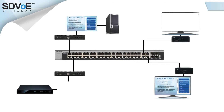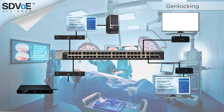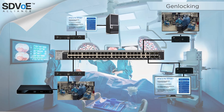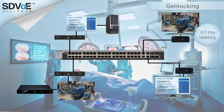Let's begin with the genlock mode. Mission critical applications such as operating theatres or the live streaming of an event require genlocking. The genlock mode ensures that the source connected to the transmitter outputs the exact resolution to the receiver connected to the display. The total latency from source to display in genlock mode is 0.1 milliseconds, which is actually the same as your matrix switch. This is exactly what we mean by the matrix transformed — it's identical to matrix switch performance, but on a flexible, cost-effective ethernet backbone.